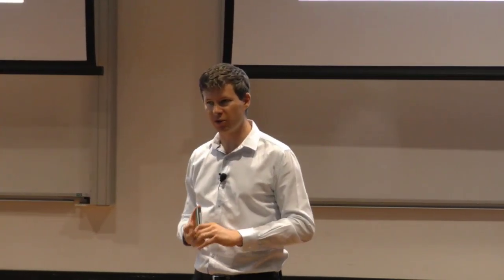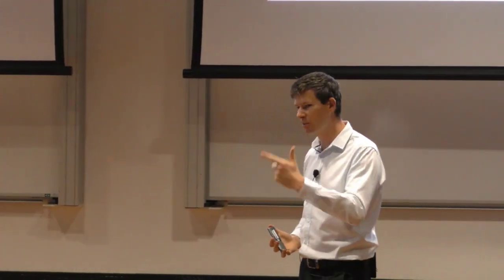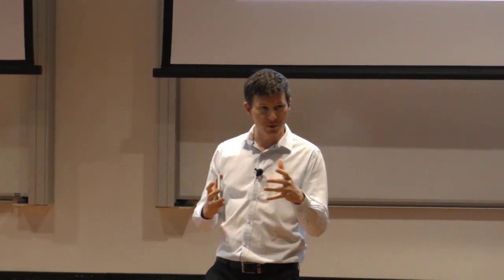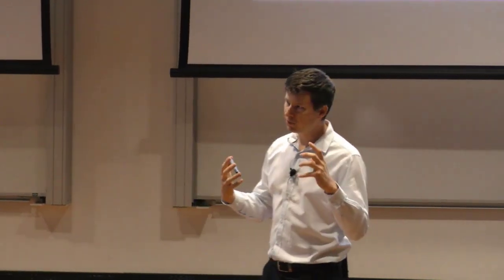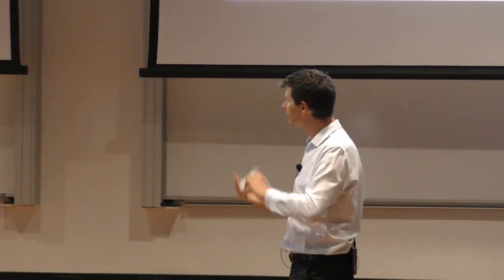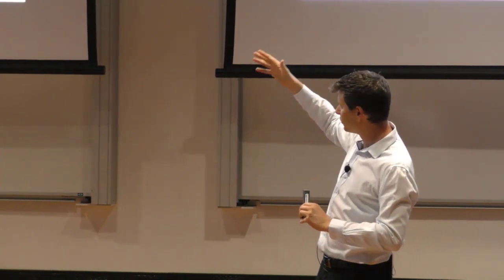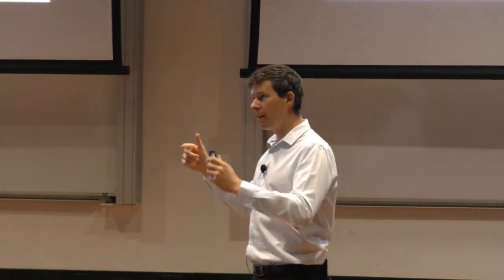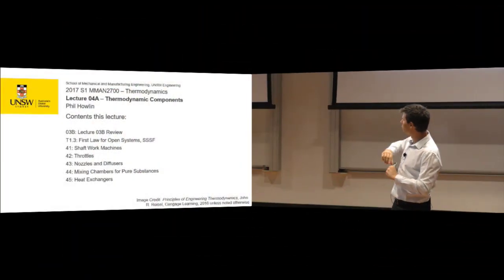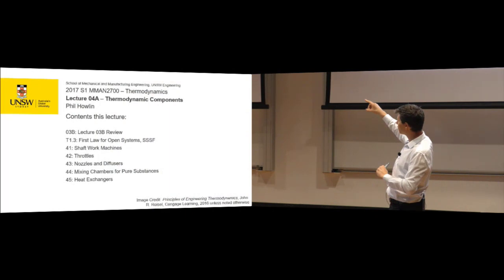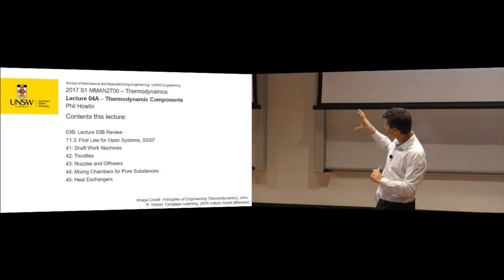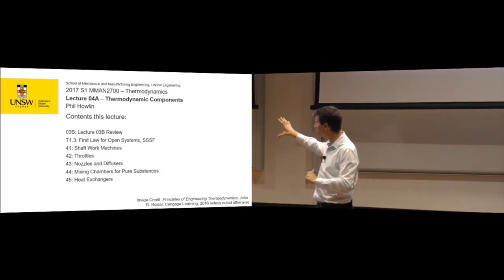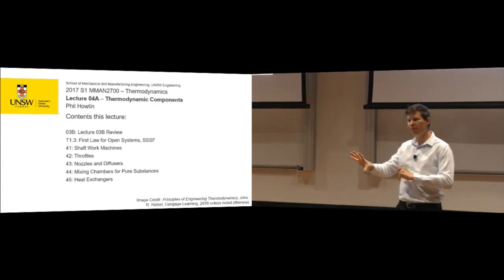We've defined ideal gases, we've defined pure substances, we've worked a little bit with them, we've read some tables. Now we're saying, what are we doing with these? So: shaft work machines, throttles, nozzle diffusers, mixer chambers, and heat exchangers — and then we put these together in cycles. We go through a boiler, then a shaft work machine called a turbine, then a condenser, and then back into a pump. Boom — steam power.